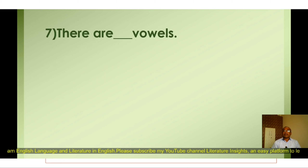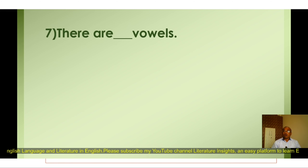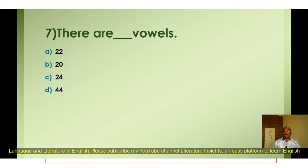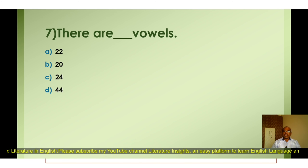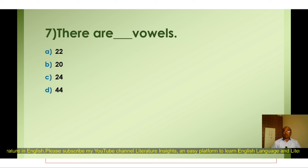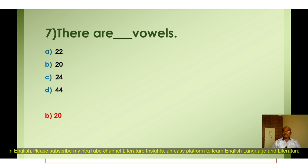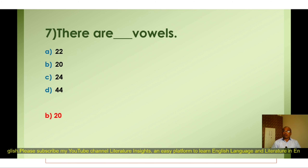Question number seven: How many vowels are there? A) 22, B) 20, C) 24, D) 44. The correct option is B) 20. There are 20 vowels.